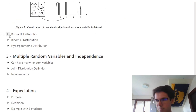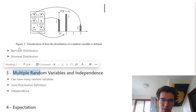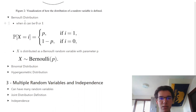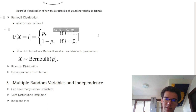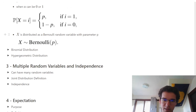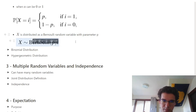Now let's talk about different types of distributions. The Bernoulli distribution: our random variable can take on 0 or 1, the probability of 1 is P, the probability of 0 is 1 minus P — kind of like the coin flip scenario. We say X is distributed as a Bernoulli random variable with parameter P.